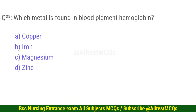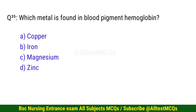Question number 35. Which metal is found in the blood pigment hemoglobin? The correct option is B: Iron.